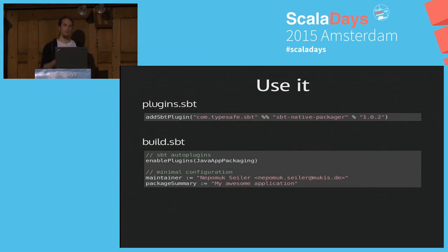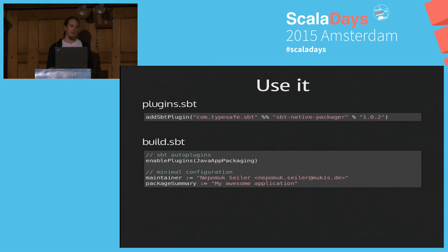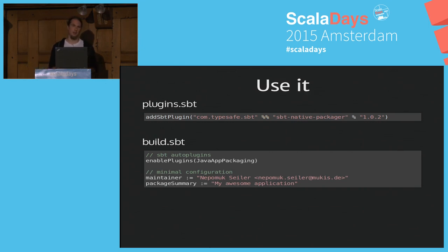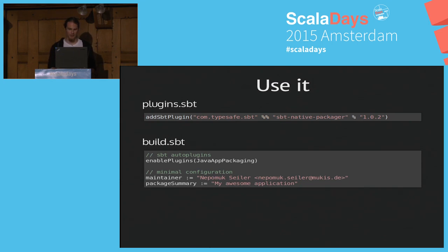Your build.sbt just looks like this: enable plugins — in this case, I'm enabling JavaAppPackaging, which is an archetype that sets up the build for you with a predefined default package containing everything you need to run your application. The other two lines — maintainer and package summary — aren't mandatory for every format, but it's courteous to specify them. Some build tools work with them, and if you don't set a maintainer, you can't really de-install the package. These two lines don't hurt and are very readable.